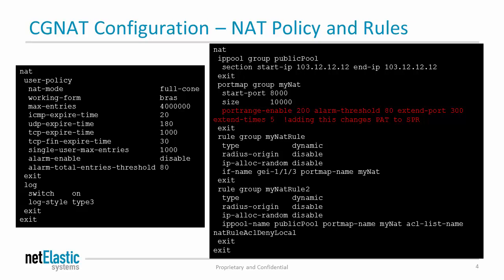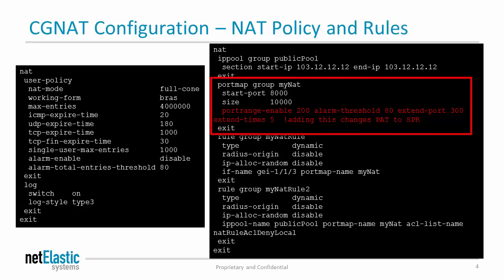Now let's take a look at the port map group definition. Here you define the starting port and the size of the port block. There is also a port range enable option. If port range enable is not configured, the mapping algorithm will be PAT. If port range enable is configured, the mapping algorithm will be SPR. Port range enable provides a very flexible way to configure user port allocation. In the example shown, the user will be initially allocated 200 ports; when usage reaches 80%, the NAT module will allocate an additional 300 ports, and this process can be repeated 5 times. You can define as many port map groups as you need. Keep in mind that the parameters defined in port map group are per public IP, so the total number of available NAT sessions equals the number of public IPs multiplied by the port size defined under the port map group.